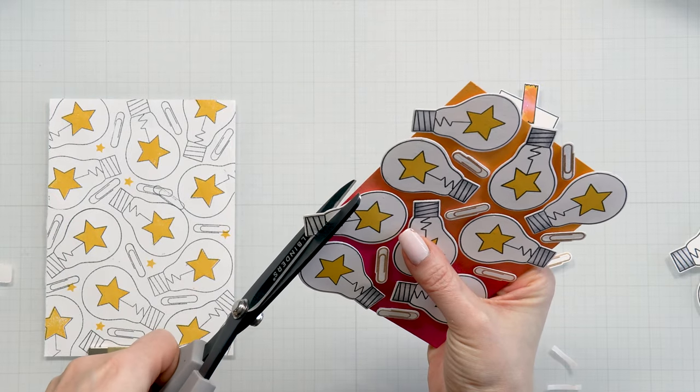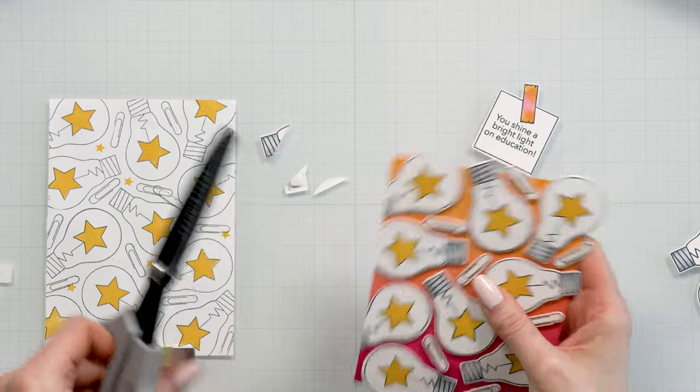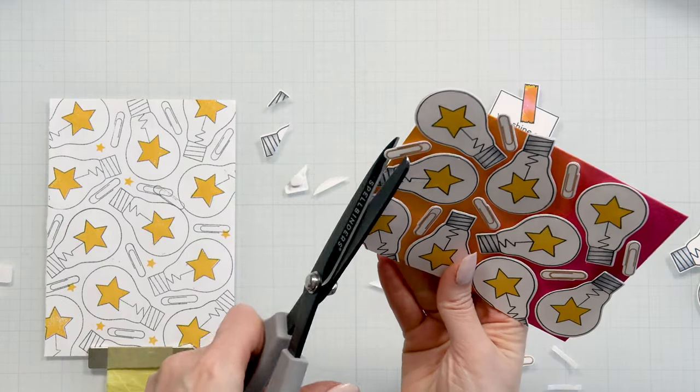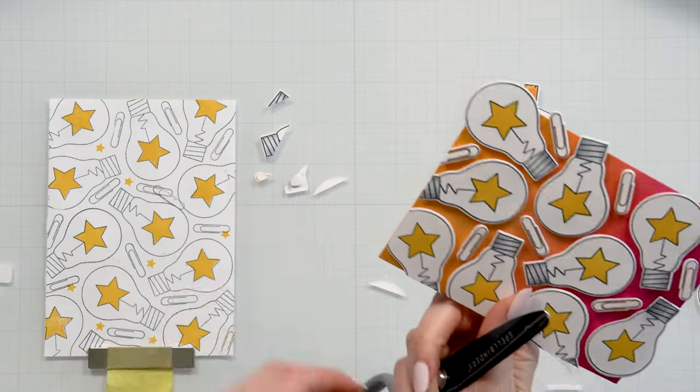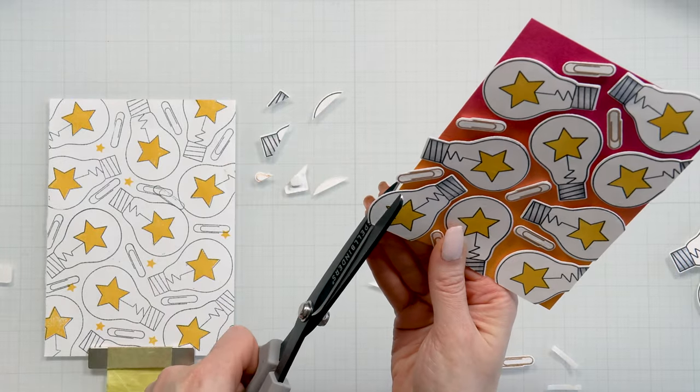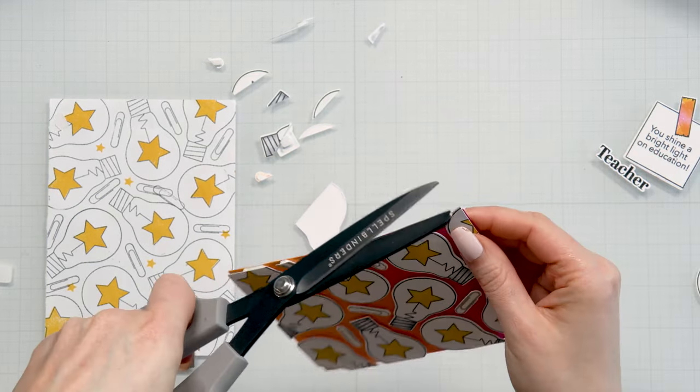I do have a gap at the bottom there and I will come back to that gap and I will add another partial light bulb there. I also will come back and add some of the trimmed paper clips onto some gaps that I have on my background just to fill it in. And here we have our pattern finished. I love the way this turned out.